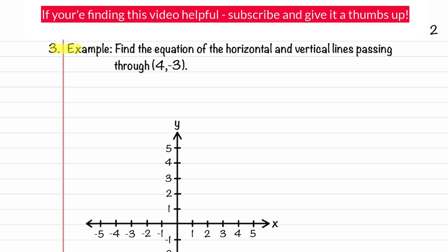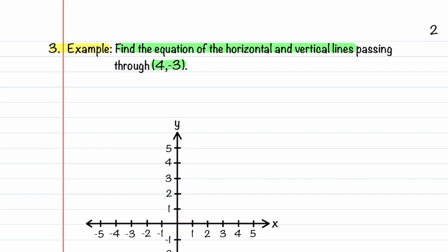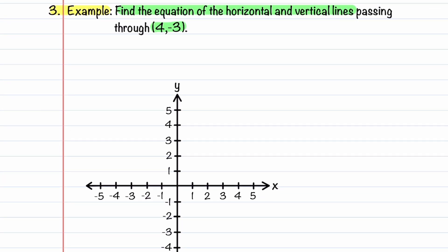Let's now look at our other example. In this example, we're going to find the equation of the horizontal and vertical lines passing through the point (4, -3). Let's start by putting the point (4, -3) on our graph. So what we want to do is find the equations of the horizontal and vertical lines that pass through this point.